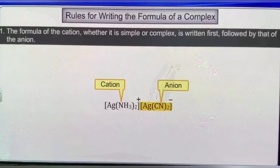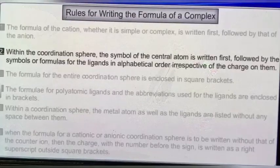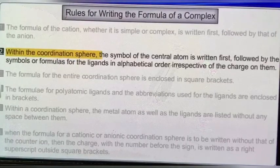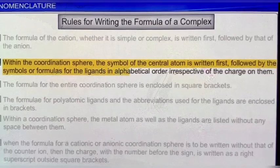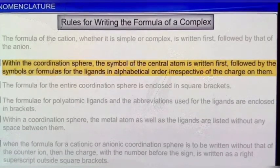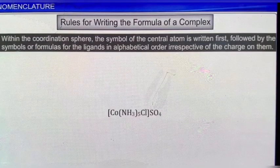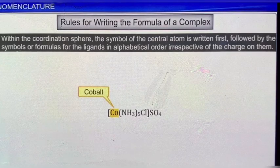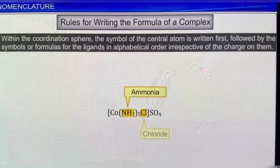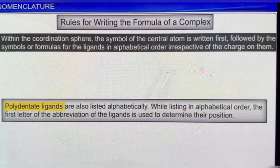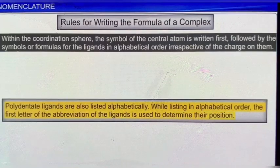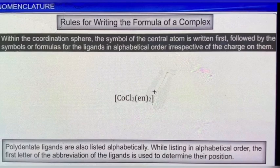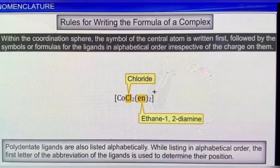The second rule is that within the coordination sphere, the symbol of the central atom is written first, followed by the symbols or formulas for the ligands in alphabetical order, irrespective of the charge on them. For example, in the complex shown here, the metal atom cobalt is written first, followed by the ligands ammonia and chloride. Polydentate ligands are also listed alphabetically. While listing in alphabetical order, the first letter of the abbreviation of the ligands is used to determine their position. For example, if a complex contains chloride and ethane-1,2-diamine (abbreviated as EN), then in alphabetical order, chloride is written first, followed by ethane-1,2-diamine.